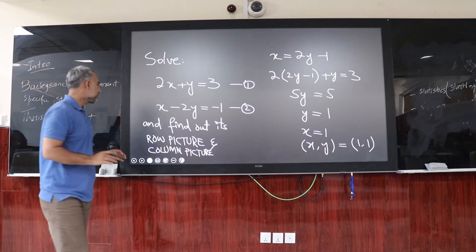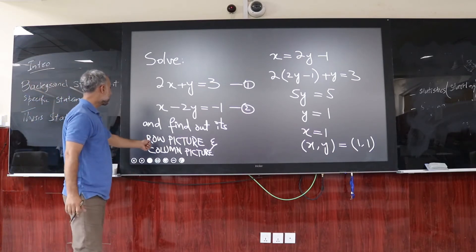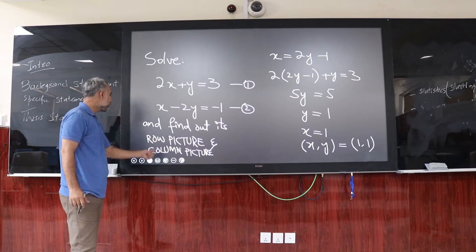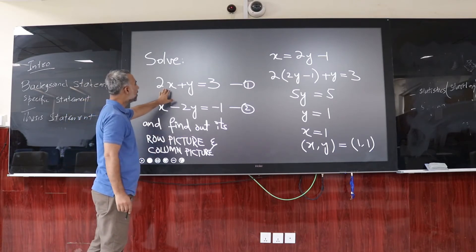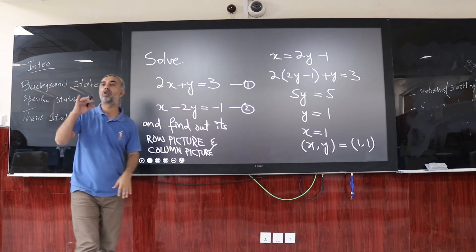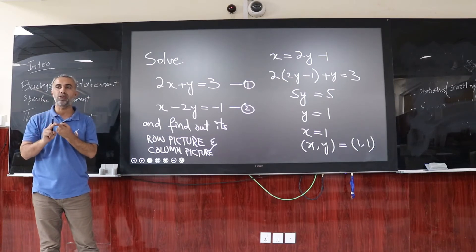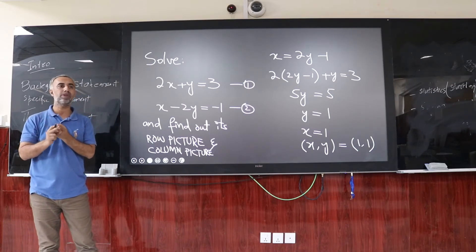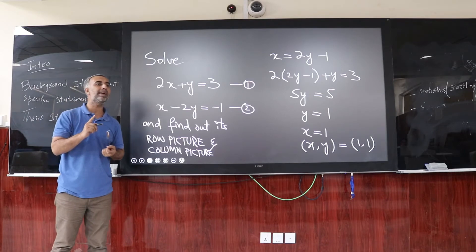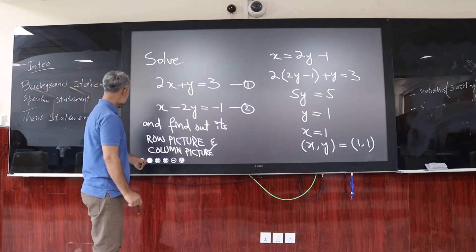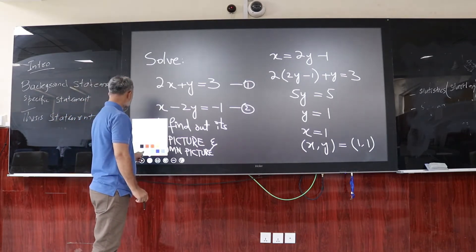However, if we are asked to find the row picture, we need to go row by row. First, we consider the first row, and then we consider the second row. Now, proceeding to the next page.